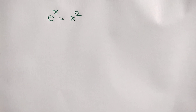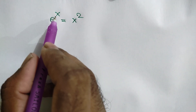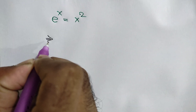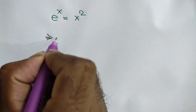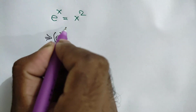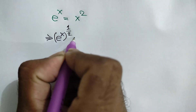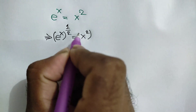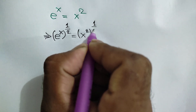Hi everyone. In this video I am going to show how to find the value of x where e to the power x is equal to x squared. Taking power half on both sides, we can write e to the power x whole to the power half is equal to x squared whole to the power half.